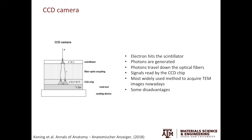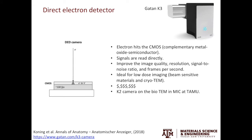To overcome this challenge, a new type of camera called the direct electron detector was introduced. In the direct electron detector, CMOS — the complementary metal oxide semiconductor — replaces CCD. When the electron beam hits the CMOS, it will be directly read as a signal. Compared to CCD cameras, the direct electron detectors offer improved image quality, resolution, signal-to-noise ratio, and frames per second. It is ideal for studying beam-sensitive materials such as lithium-ion containing materials and biological specimens.